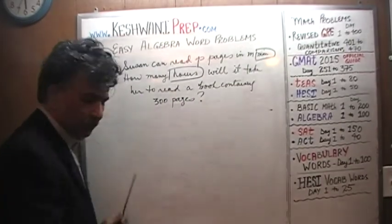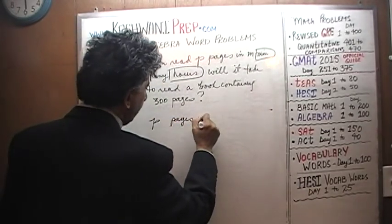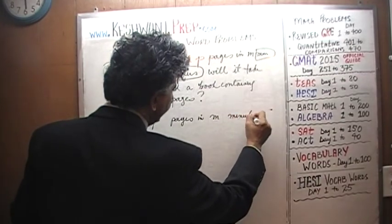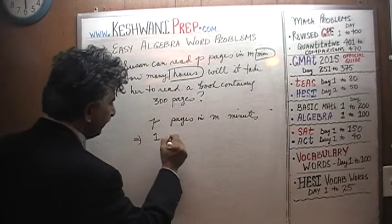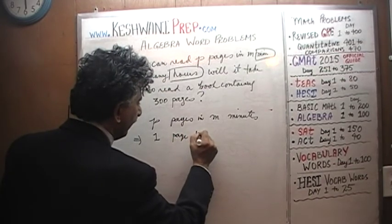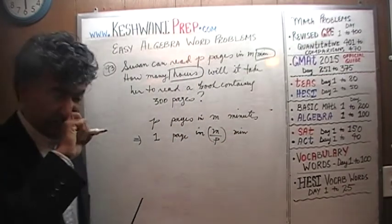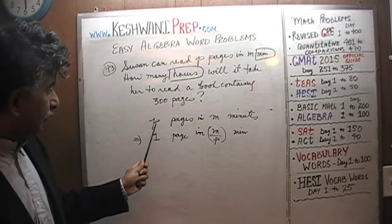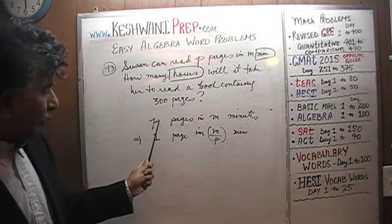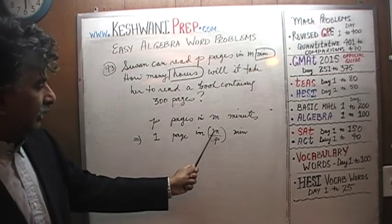Let's do it together. We start out with what we know: she can read P pages in M minutes. If she can read P pages in M minutes, that implies she can read one page in M over P minutes. For example, if you could read two pages in M minutes, one page takes M over 2. If five pages in M minutes, one page takes M over 5. So if P pages in M minutes, one page takes M over P minutes.